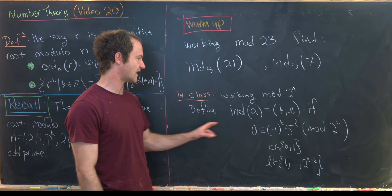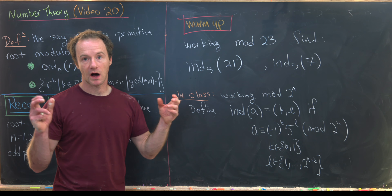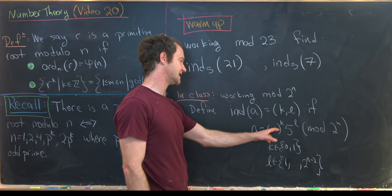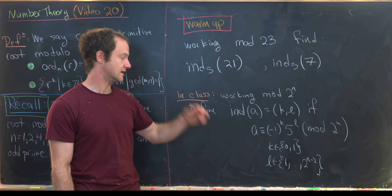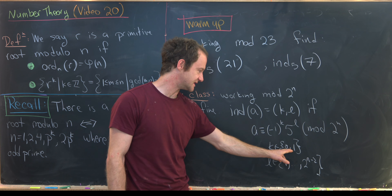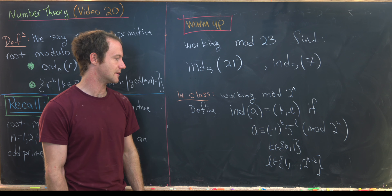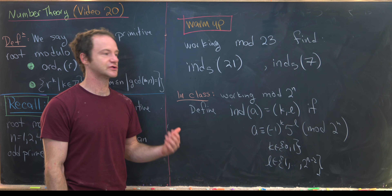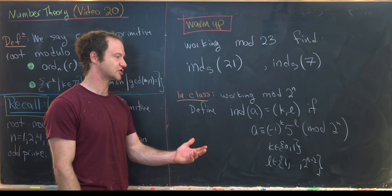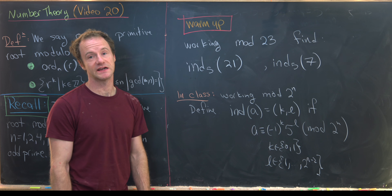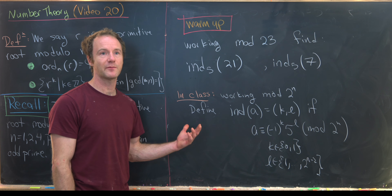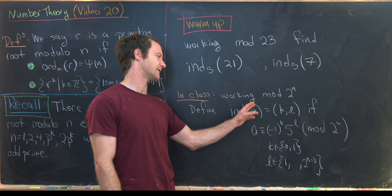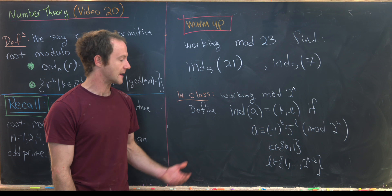Working mod 2^n, the index of a is defined as an ordered pair (k, l) where a ≡ (−1)^k · 5^l mod 2^n, with k ∈ {0, 1} and l ∈ {1, …, 2^(n−2)}. This is built on the theorem we proved. The exercise is to develop analogous properties for this generalized index — such as the index of a product, the index of a power, and so on.